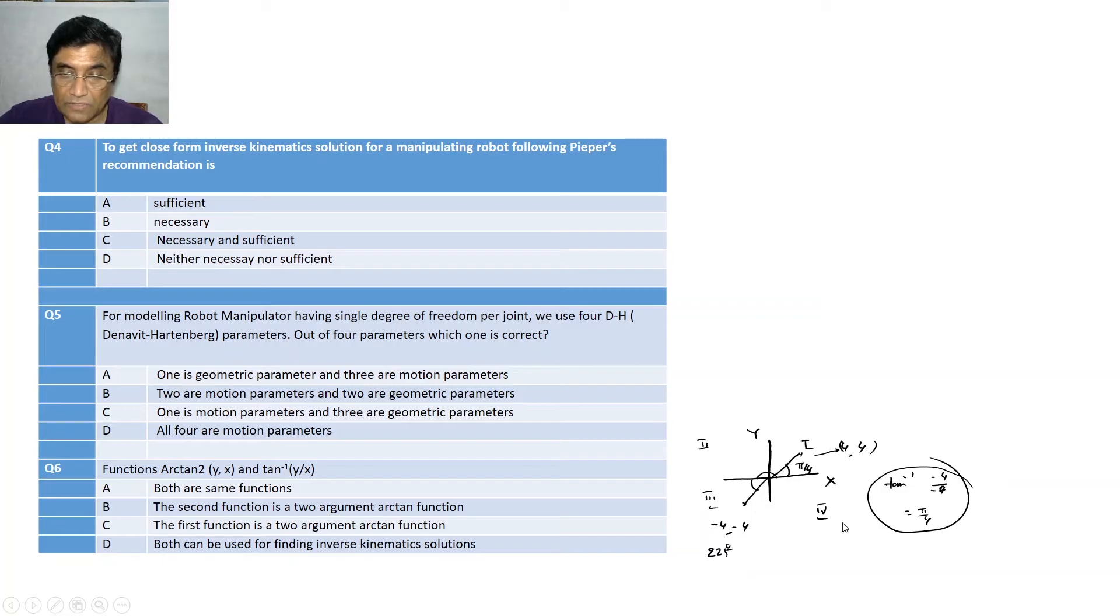So we modify a little bit the arctan function by taking care of the argument of the variables you are passing to the function. So the correct answer is the first function is a two argument arctan function. So this is different. Arctan 2 function is different. Arctan 2 is not equal to tan inverse function. Arctan 2, two means it takes care of the argument of the two variables. So this is the correct answer.